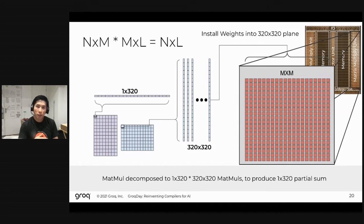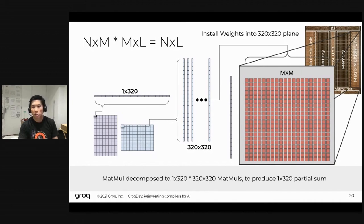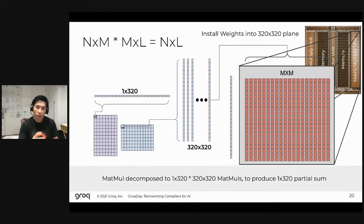Once that data is co-resident with the compute, we're able to freely stream 320-element vectors back to back into the MXM plane and achieve high hardware utilization. As it turns out, there are actually four of these planes within a single chip, so every single cycle we're able to perform four of these operations in parallel.